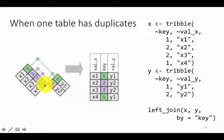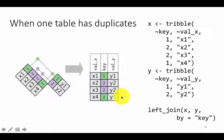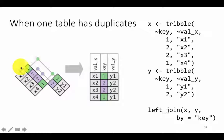Finally, X4 has a match with one, so X4, Y1 is going to appear in the output. Although it's a left join, all the rows here had matches, so there are no NAs that need to appear. This is how the join is going to work.